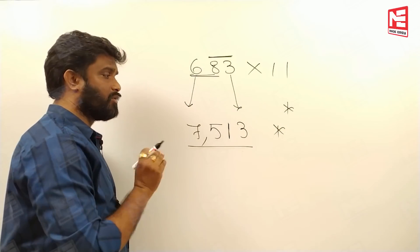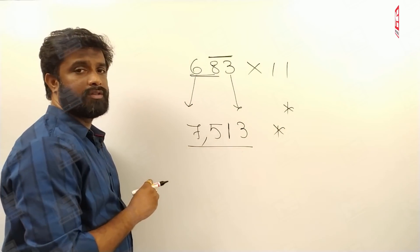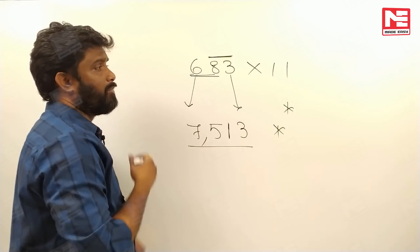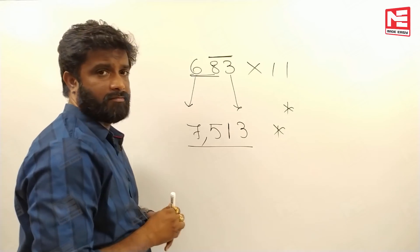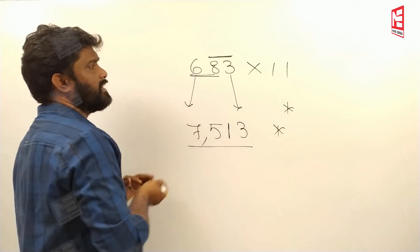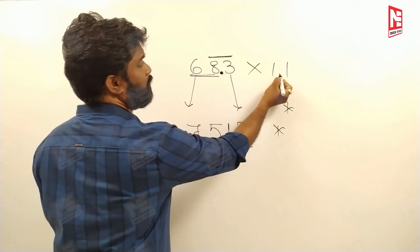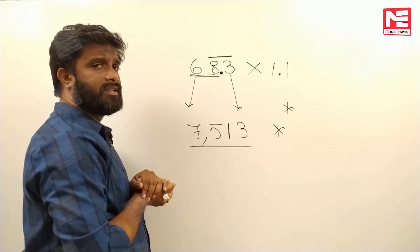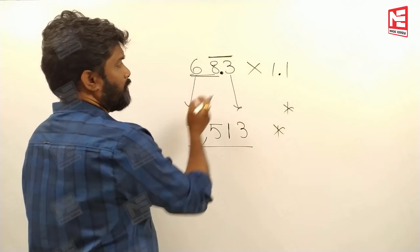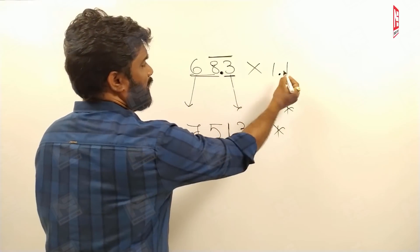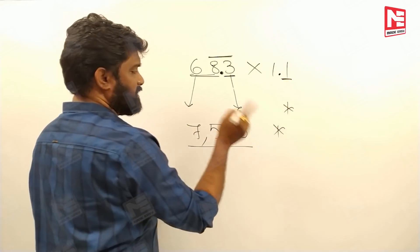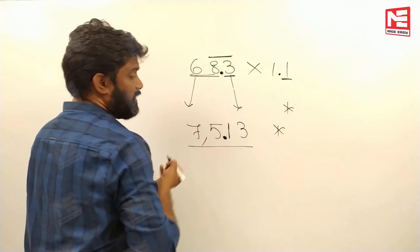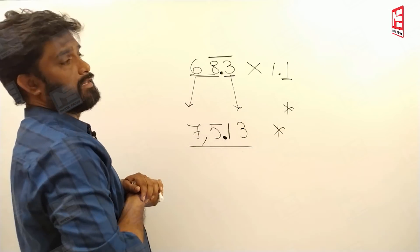Now if decimals are involved, it is still very easy. For example, 68.3 into 1.1 — if you remove the decimals, this is nothing but 683 into 11, which gives 7513. After the decimal point there is one digit in each number, so in the product there should be two digits after the point. Your answer is 75.13.